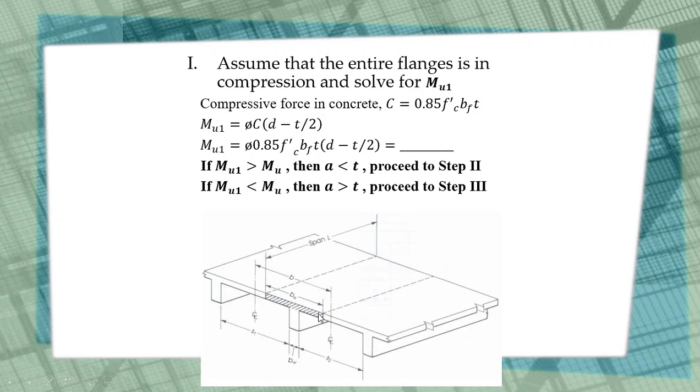The formula for compression is 0.85 f'c AB. So if the T-beam flange is in compression, the depth of compression block a is equal to t. So the formula for C is 0.85 f'c times bf times t, considering the whole flange is in compression.